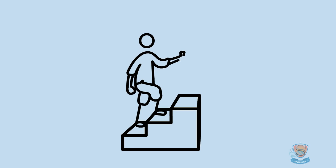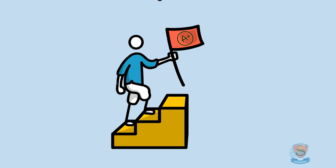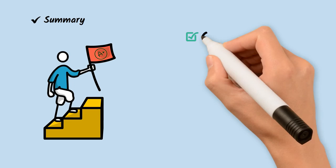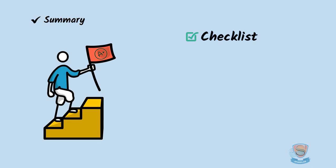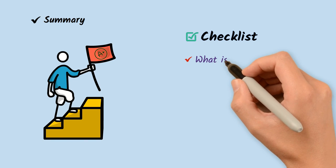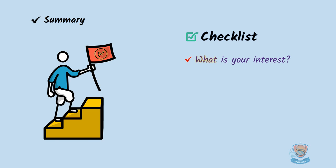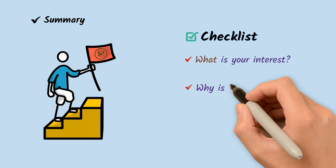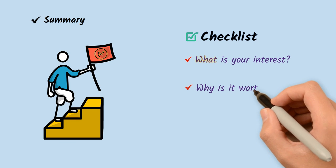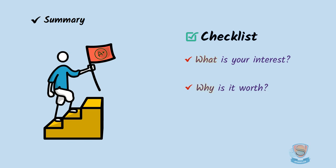Now let's summarize our discussion. We have learned that for achieving success of our research, we must choose a workable research topic. Here is a checklist to summarize what is necessary to select a workable research topic. It includes: what is your interest, why is it worth, and how it can be done.